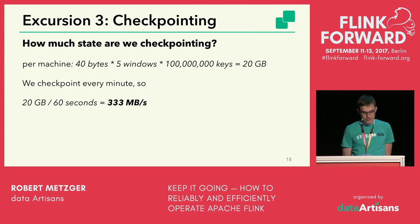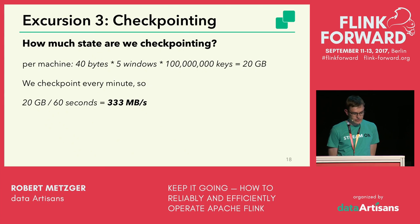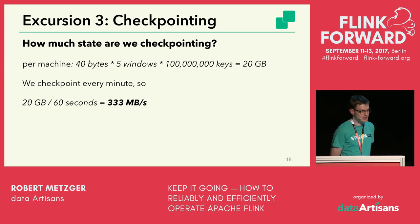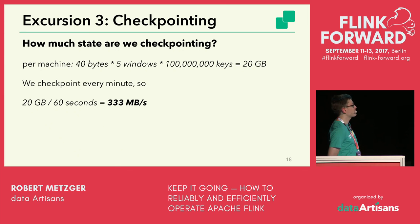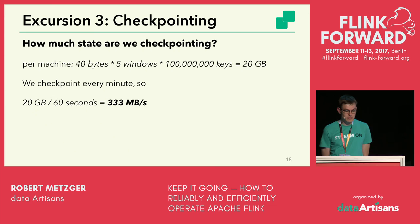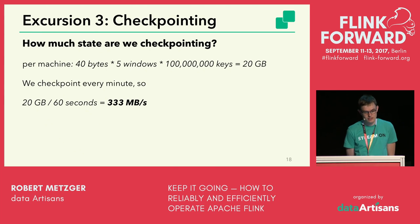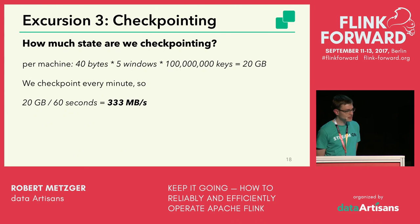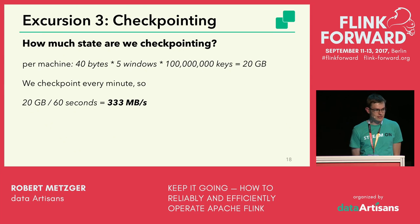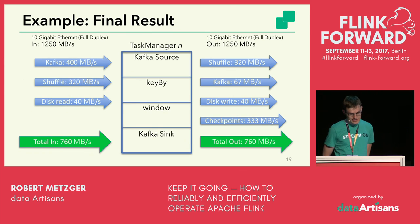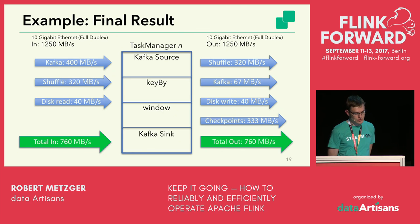For checkpointing: we checkpoint every minute, so every minute we copy the entire state to a remote file system. State per machine is 40 bytes × 5 windows × 100 million keys = 20 gigabytes. Checkpointing every minute means 330 MB/s of network traffic. So the final result is approximately 760 MB/s in and out per second — just over 50% of the 10 gigabit network. For the entire rack, that's about 10 gigabytes per second being exchanged.